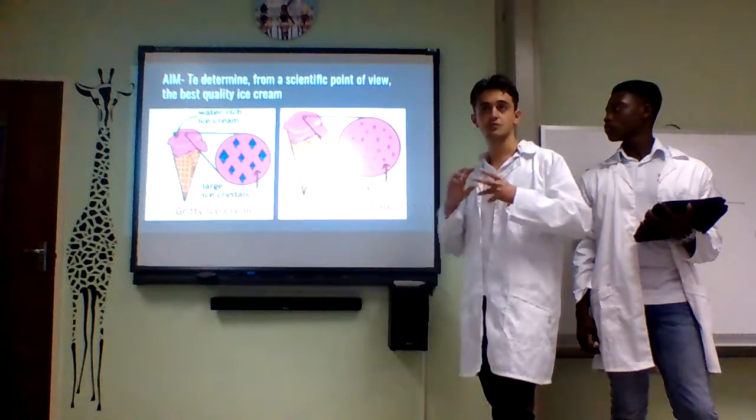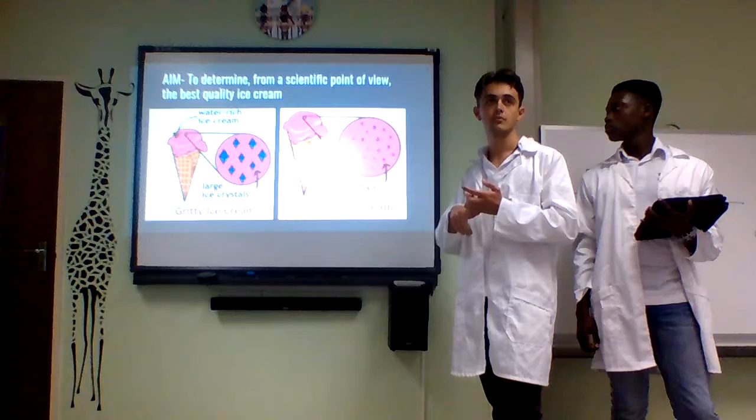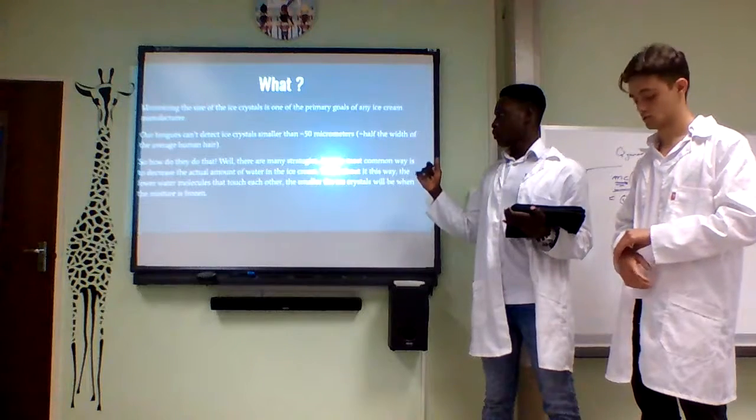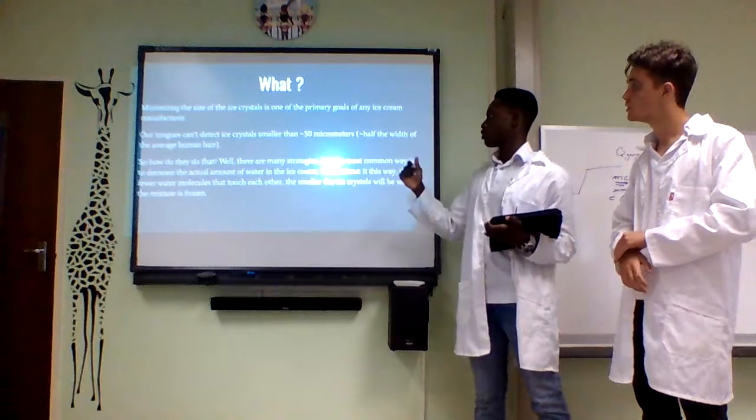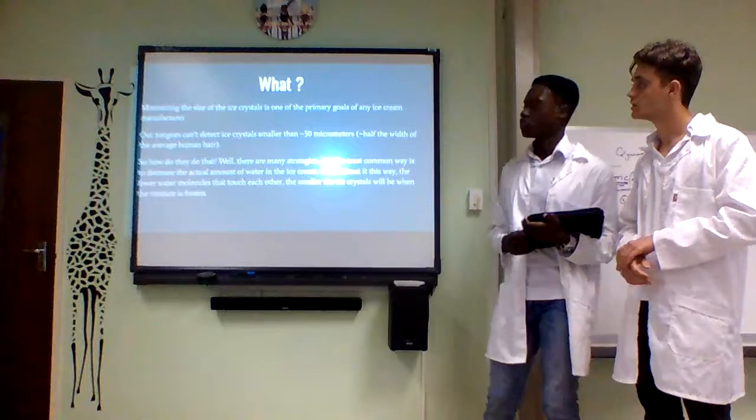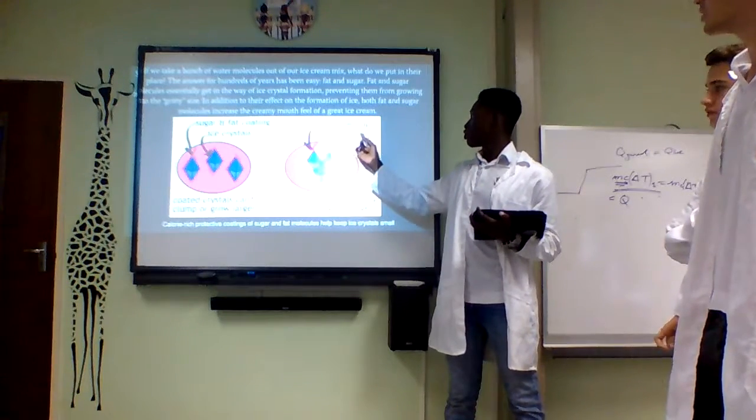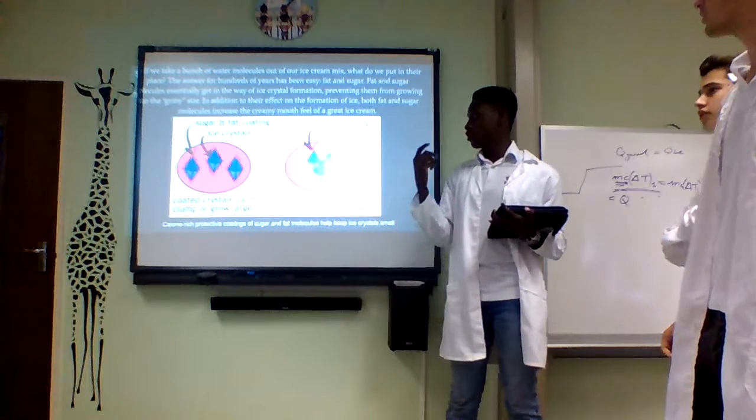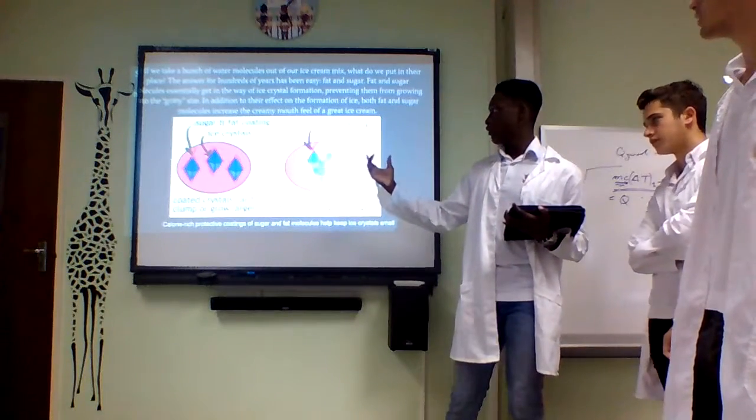So when the ice crystals form in ice cream, the two main things that affect the size of it are the sugar and the fat. What they do is purposefully add fat and sugar to the ice creams while trying to decrease the water, because our tongue can't detect crystals that are smaller than 50 microns. When there is no sugar and fat, the crystals will clump together, so there will be large crystals and the ice cream won't be smooth. Whereas when sugar and fat coat the ice crystals, it prevents them from clumping.